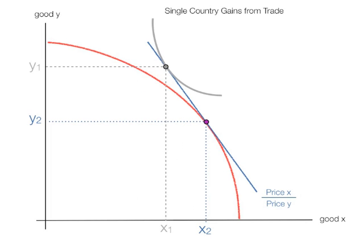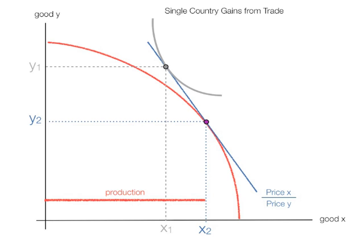Let me review a little bit. I've talked about gains from trade in another video, so I just want to review quickly. A country will produce at the red level and it will consume at the gray level. The level of production is measured from the origin to X2, and the level of consumption is the gray line from the origin to X1. Exports is the difference between X2 and X1, because the country produces more than it consumes.